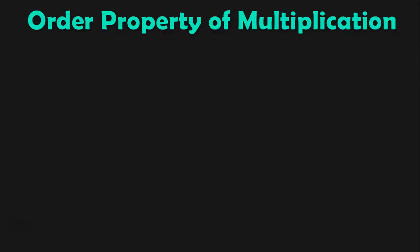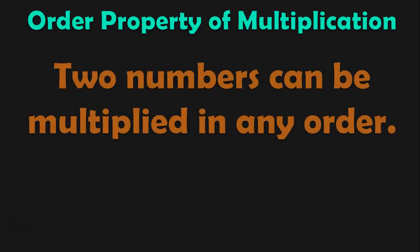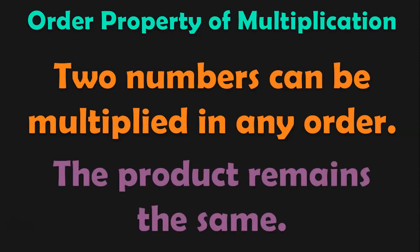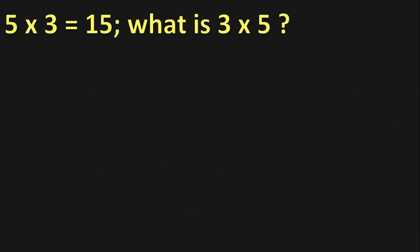In the worksheet, the next topic that we are going to see is the order property of multiplication. Let us quickly revise what order property means: 2 numbers can be multiplied in any order and the product remains the same. Let us see this with examples. 5 into 3 is equal to 15. 3 into 5 is also 15. This is the order property — 5 into 3 or 3 into 5 will give you the same answer, 15.